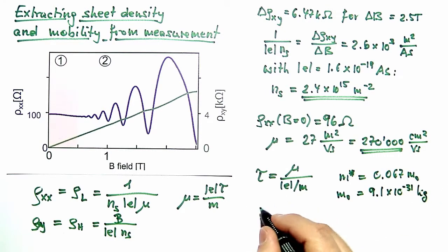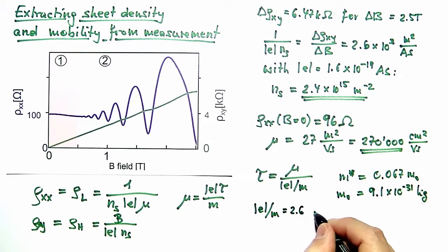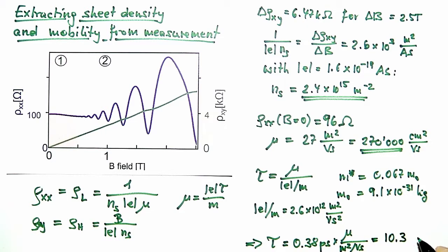And using these numbers we find the ratio E over M which is 2.6 times 10^12 meters squared per volt seconds squared. And this gives the desired estimate of the scattering time tau, which is 0.38 picoseconds times the mobility in units of meters squared per volt second, which gives 10.3 picoseconds.